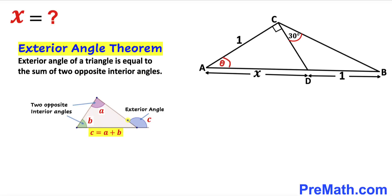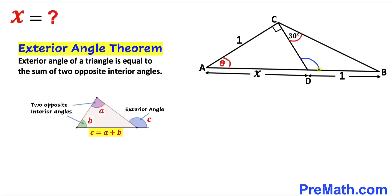We can see that this is our exterior angle C, whereas A and B are our opposite interior angles, such that C equals A plus B. Therefore, in our case this angle is going to be the sum of the two opposite interior angles: theta plus 90 degrees.